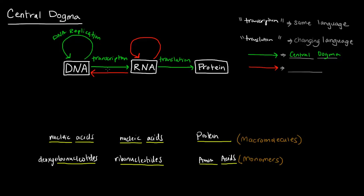You'll notice that I wrote some red arrows here. So what are these red arrows about? RNA can actually replicate itself. These are going to be exceptions, these red arrows. So RNA replication, these are exceptions to the central dogma.